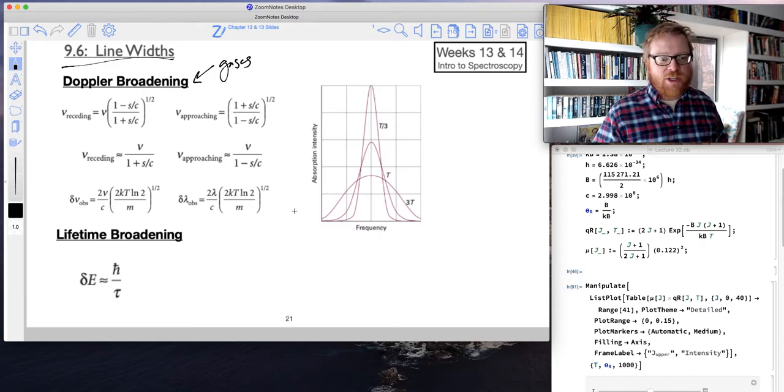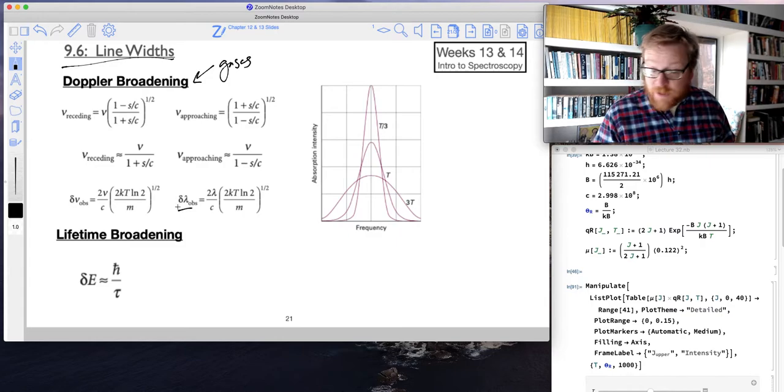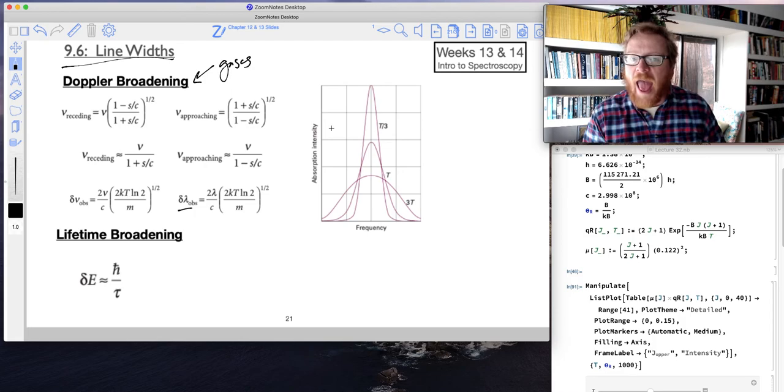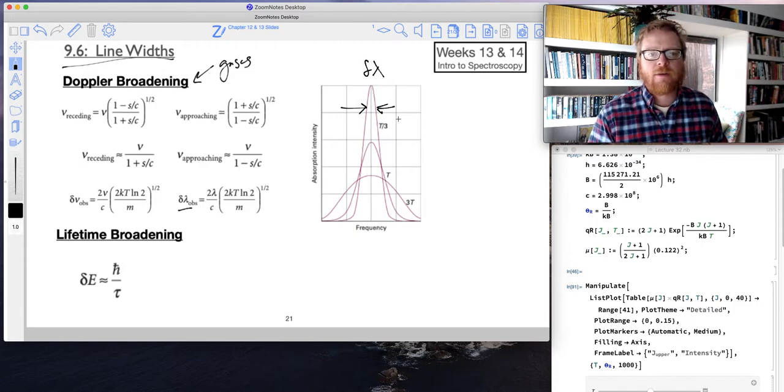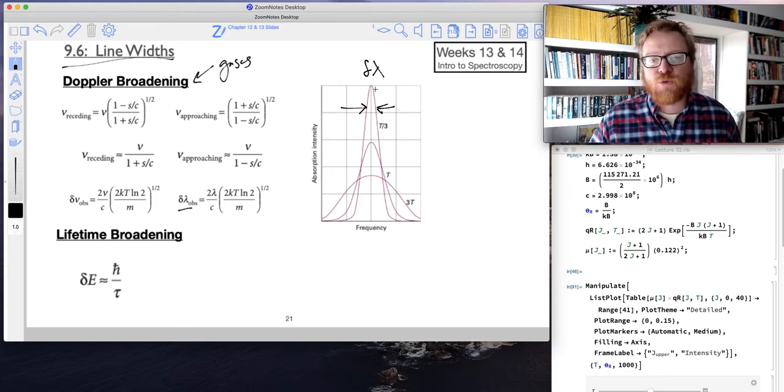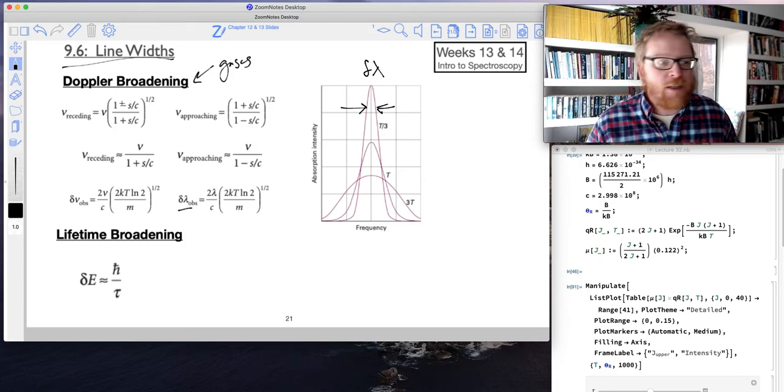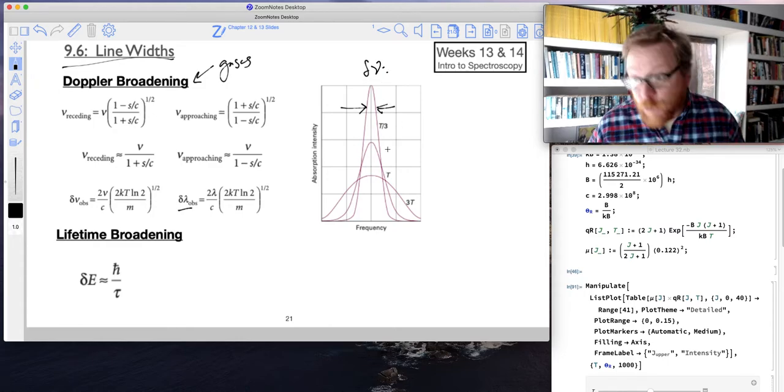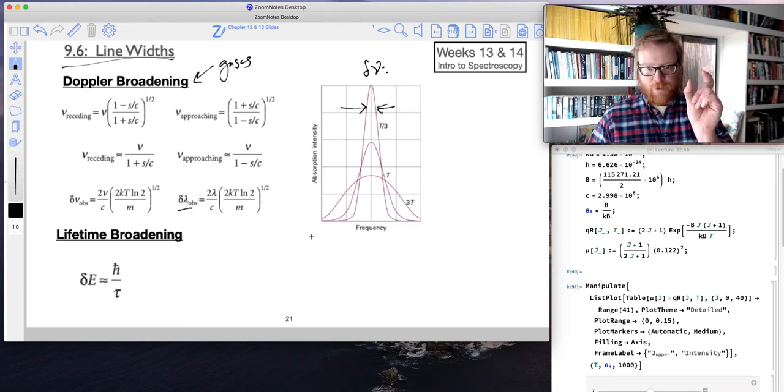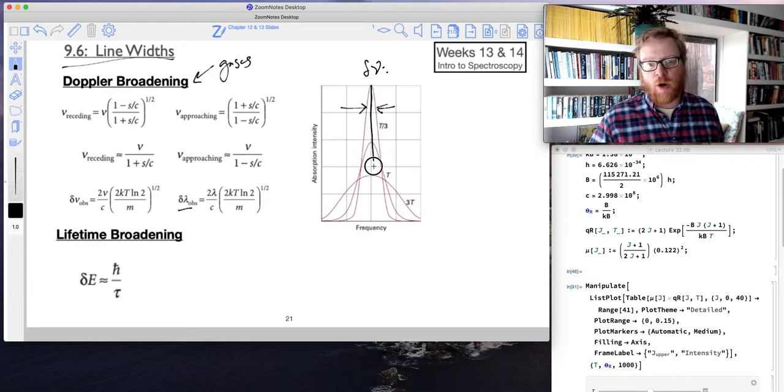I'm not going to spend a whole lot of time going through these equations. The main thing that I want to point out is all of these equations lead to a width. So that delta lambda, that is the spread in lambda. So if I look at the width of this, that is my delta lambda. We could think of it as a delta lambda, we could think of it as a delta frequency, we could think of it as a delta energy. It's some width of the otherwise infinitely sharp peak. This would be our infinitely sharp peak.